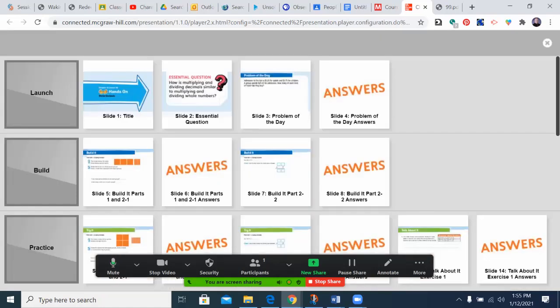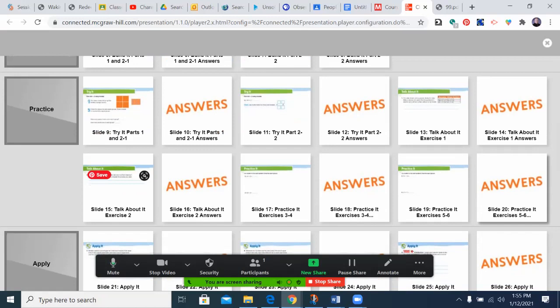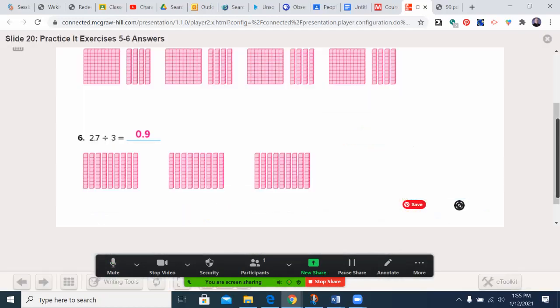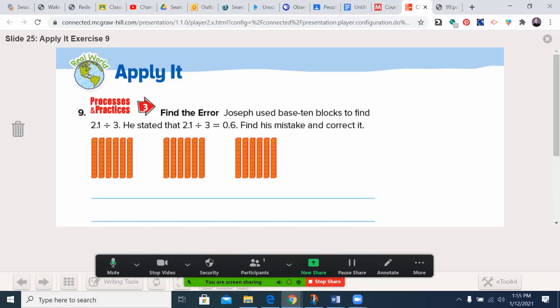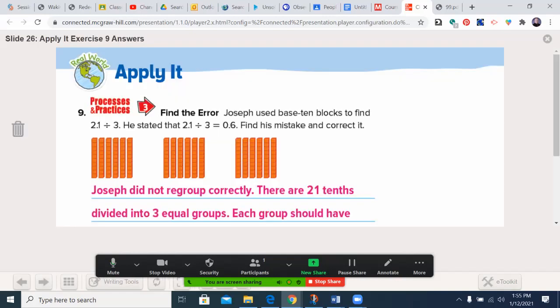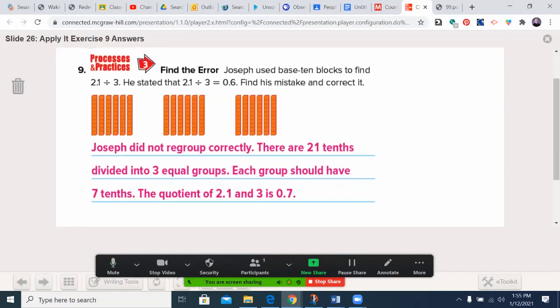Let's move ahead to number 9. We want to look at this one together as a group, at least for conversational pieces. This is the one that has an error. Find, Joseph used base 10 blocks to find 2.1 divided by 3. State that 2.1 divided by 3 was 0.6. Find his mistake. You can see that he has 6 in each one. So, what do you think he did wrong? Well, when we break this down, how many tenths are in a whole? Well, 10. 10 times 2 is 20, plus 1 is 21. He should have had 21 in there. Instead, somehow he had 18. Let's see what the book had to say. And that's where we get the answer. It was a math issue.